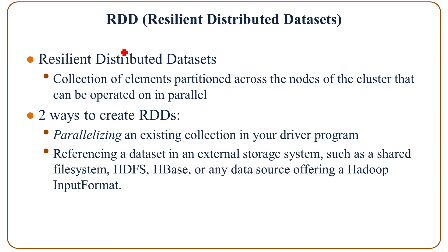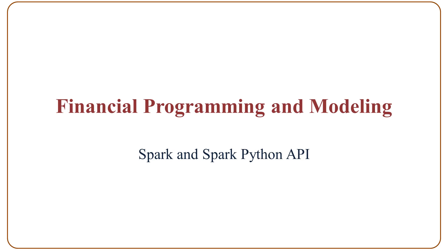Now we talked about resilient distributed datasets or RDD. An RDD is a collection of elements partitioned across the nodes of the cluster that can be operated on in parallel. There are two ways to create RDDs: parallelizing an existing collection in your driver program, or referencing a dataset in an external storage system such as a shared file system, HDFS, HBase, or any data source offering a Hadoop input format. Today we talked about Spark and Spark Python API.